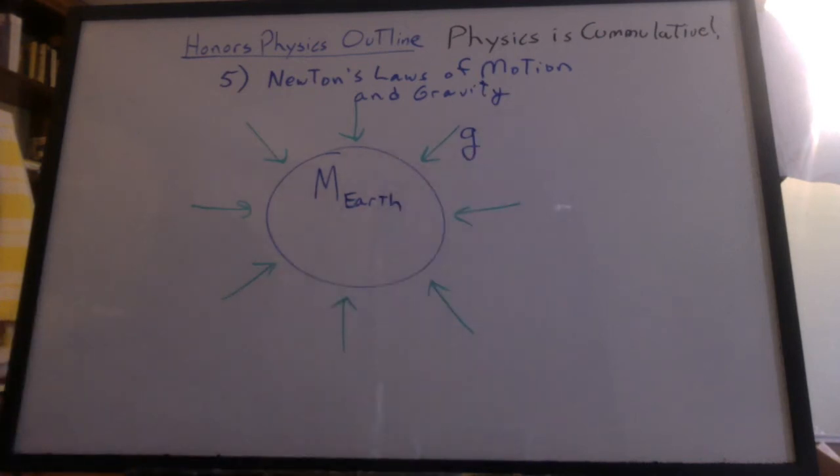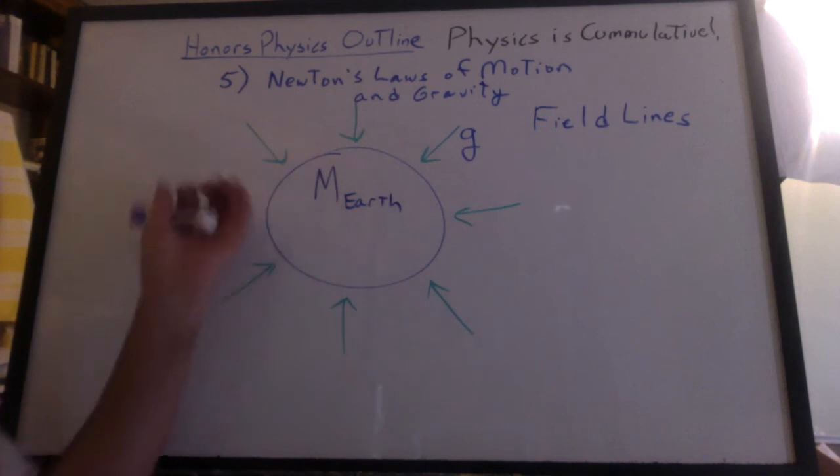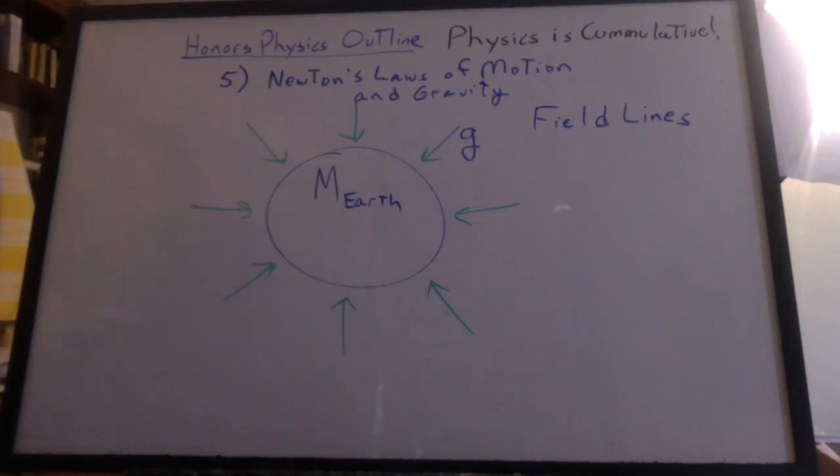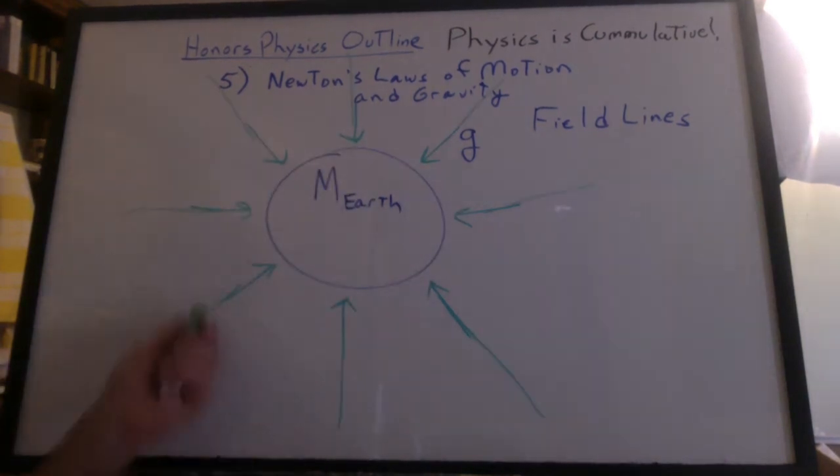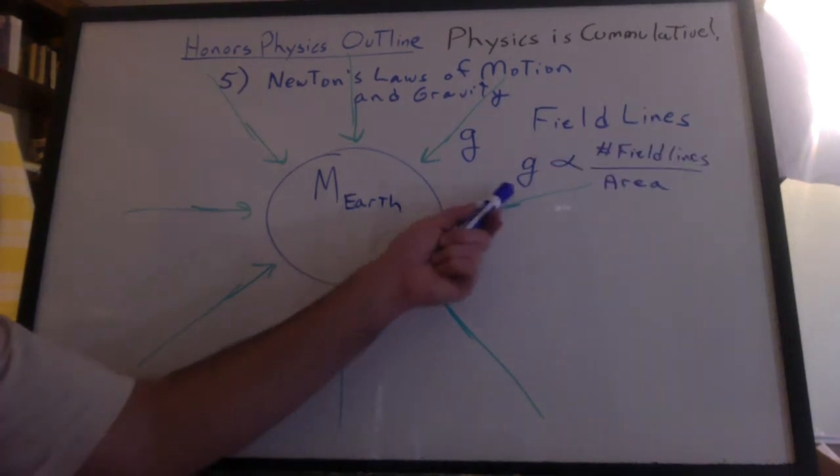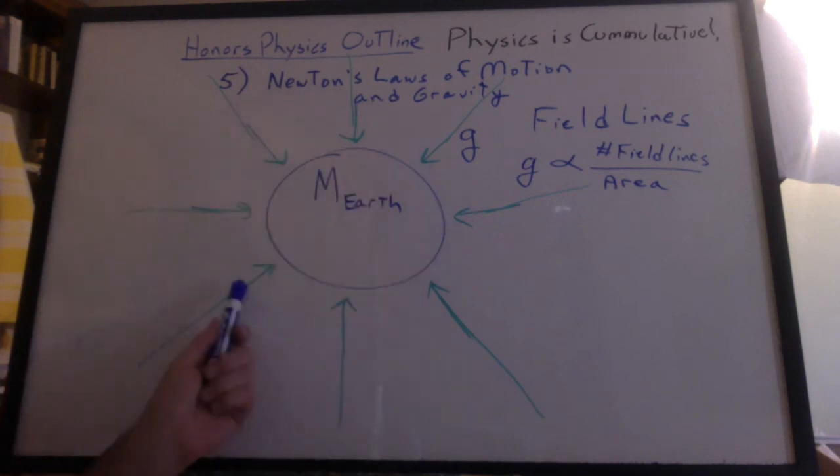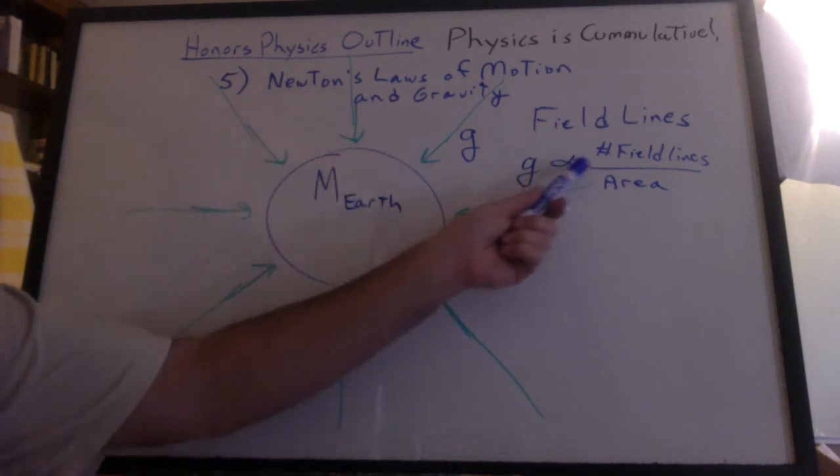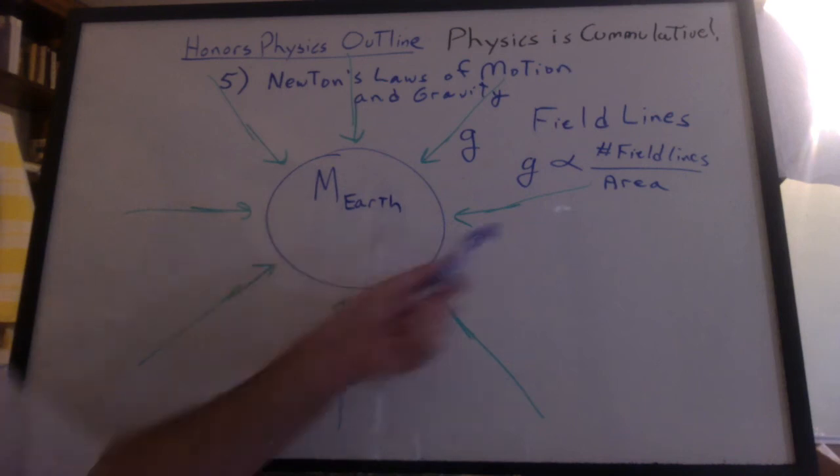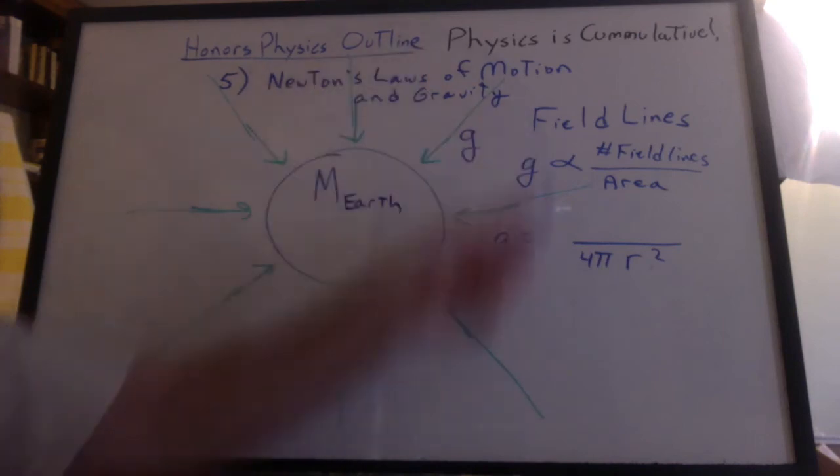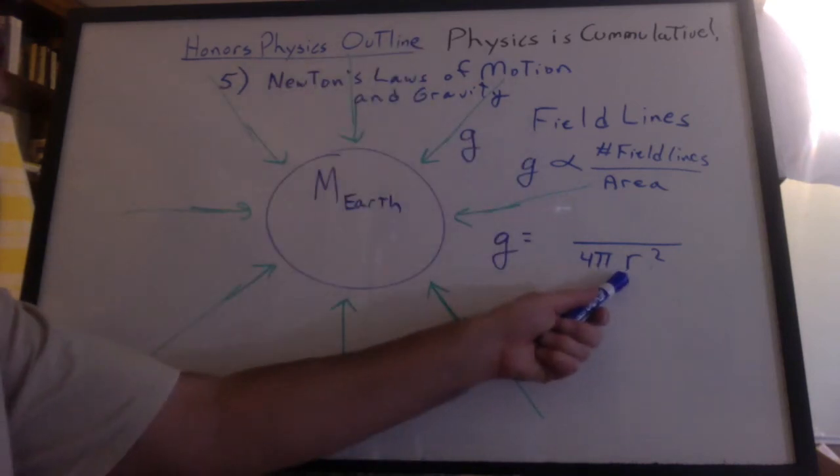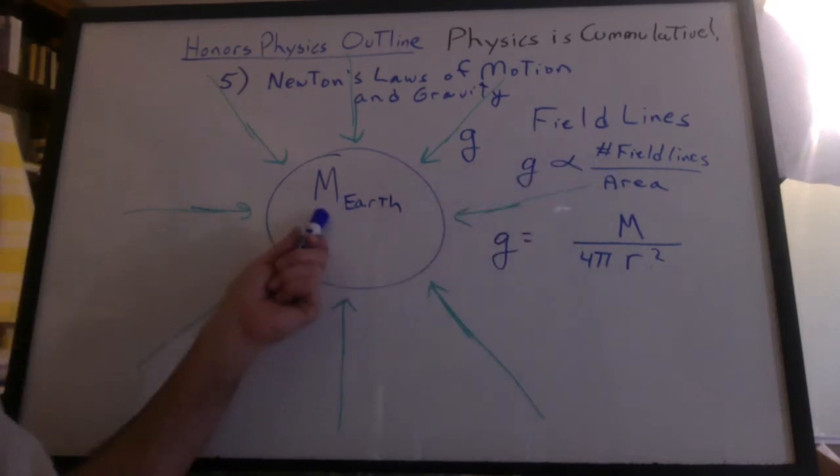Then we looked at what Newton thought about in terms of gravity as we go out further away from the Earth. We developed the concept of field lines, as Newton thought of them, as little fingers of force accelerating objects towards the Earth. He believed the mass of the Earth is what caused these field lines in the first place, and that they spread out the further away we get from the Earth. He believed that the acceleration due to this gravitational field was proportional to the number of field lines caused by this mass divided by the area that they were spread out through. He knew that the area would be the area of a sphere, 4 pi r squared.